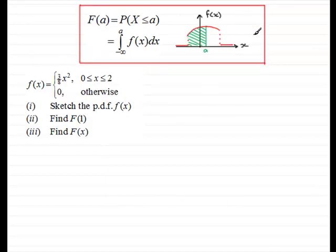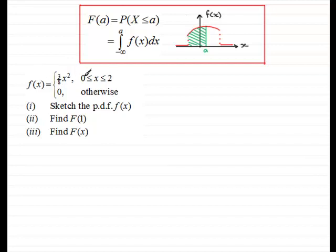F of a represents the probability of x being less than or equal to a, and that area is given by the integral of f of x with respect to x from the lower limit of the distribution, minus infinity, up to a. Here's a typical question: f of x equals three-eighths x squared for x between 0 and 2 inclusive, and 0 otherwise.